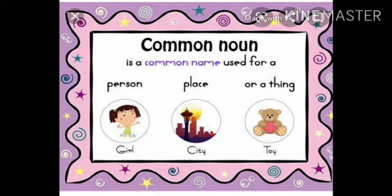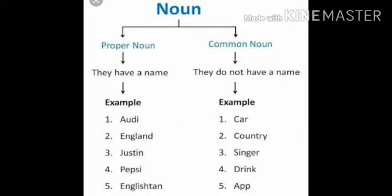City is common, and the name of the city is Bangalore, so it is proper. Here is a toy, but the toy's name is Teddy Bear, so it is a proper noun. You can say that a proper noun has a specific name, but a common noun does not have a specific name.